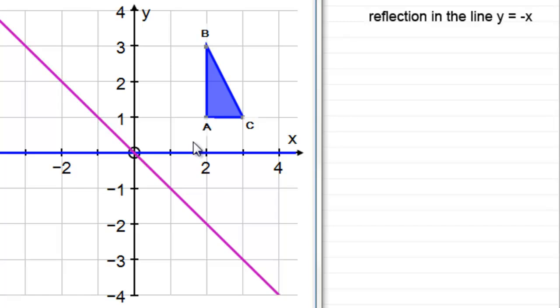You might like to put down the coordinates of where you feel that this shape is going to go to when we reflect it in this line y equals minus x. But what I'm going to do is show you how we can find the matrix that represents that transformation.